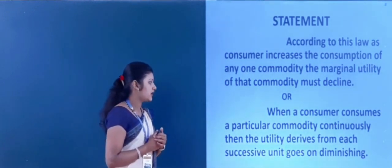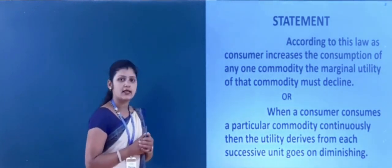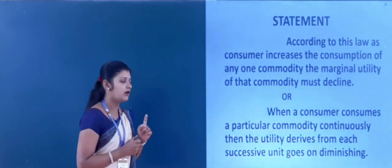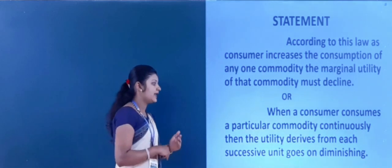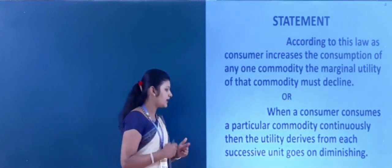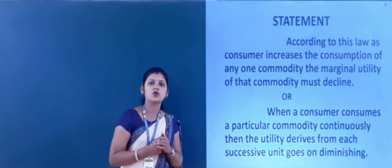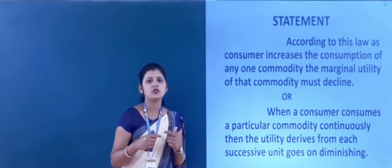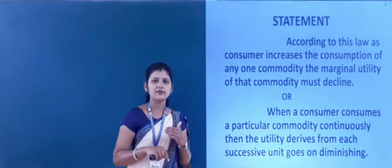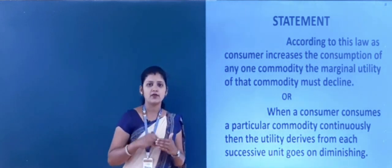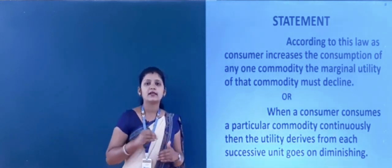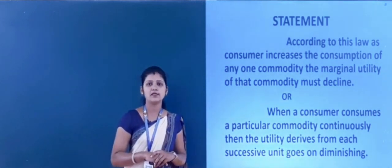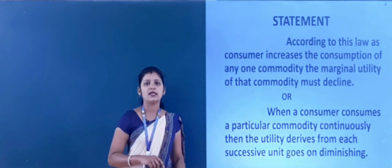When a consumer consumes a particular commodity continuously, the utility derived from each successive unit goes on diminishing. When a consumer goes on consuming a particular commodity continuously, his level of satisfaction decreases. This is the statement of the law of diminishing marginal utility.